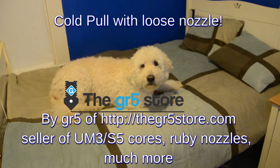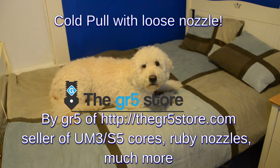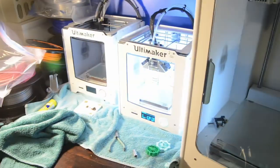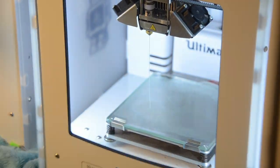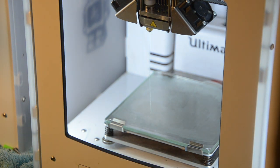How to do a cold pull on a nozzle all by itself. So first you want to heat up the nozzle. Right now I've got it at 168 Celsius.